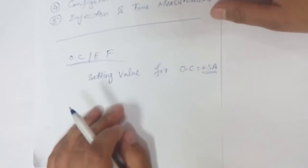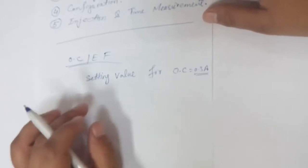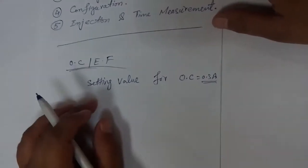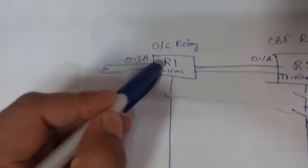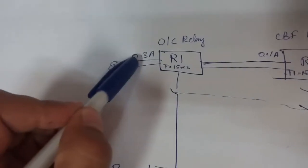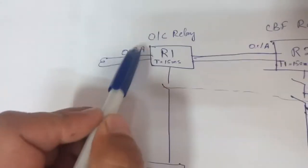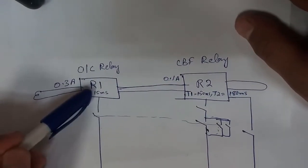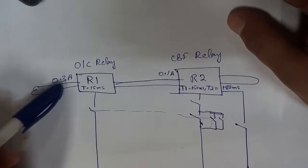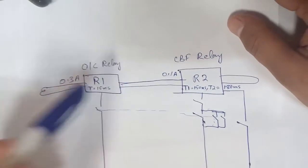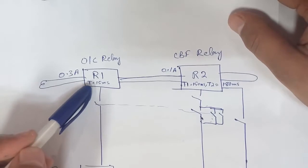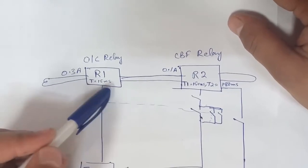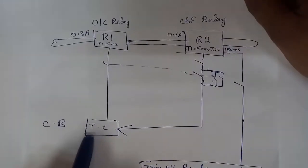For example, we have a setting value for our current of 0.3 ampere. If the current reaches 0.3 or above, it should trip the breaker. We have one current relay named R1 with a set value of 0.3 ampere and one CT. When the current reaches 0.3 or above, this relay will pick up, and after a timer of 15 milliseconds, the contact picks and gives the circuit breaker trip coil the command to trip.